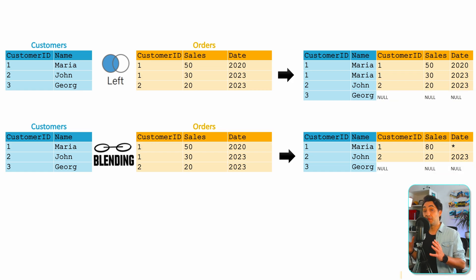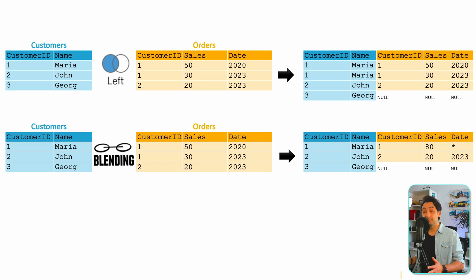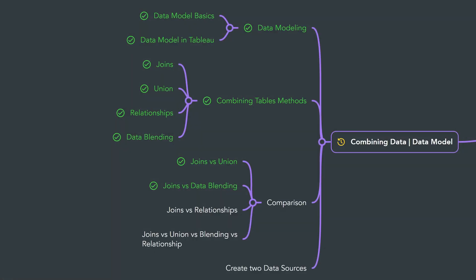This is exactly the main difference between joins and blending — when aggregations happen. In a left join, raw data is combined first and aggregations happen later in the visualization. In data blending, the data from the secondary source is aggregated first and then combined in Tableau. With that, we've learned the main differences between joins and data blending. Next, we'll learn the main differences between joins and relationships.